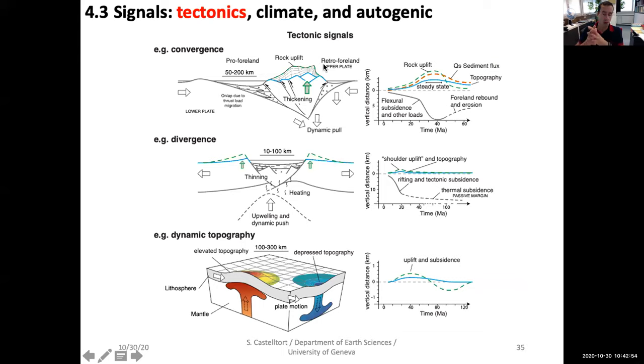And so I start with tectonics, and this is not an exhaustive view. But you know, the first order tectonic frame is set by plate tectonics. And we can have plates which converge, diverge, or slide apart of each other. So we have convergence, divergence, or sliding apart of each other. And so, here I have only put convergence, divergence, and another type of tectonics.